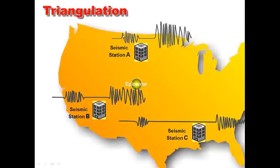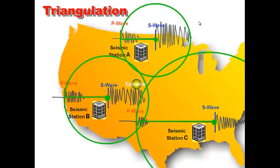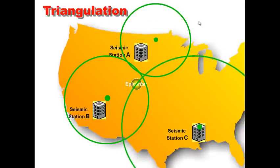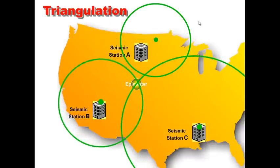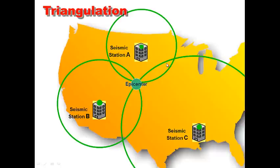We use the PS time delay for each station to find the distance to the earthquake. Then we draw circles around each seismic station — the radius of each circle equals that station's distance to the epicenter. Moving the circles onto a map, the epicenter is located where all three circles intersect. Why three circles? Because with only two circles the epicenter could be in two different places, but three circles give us an exact location.